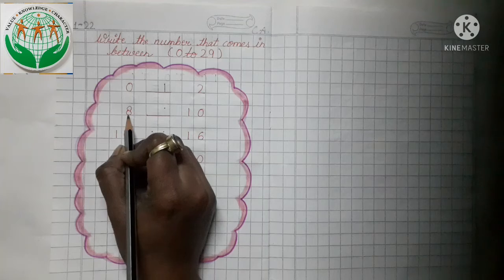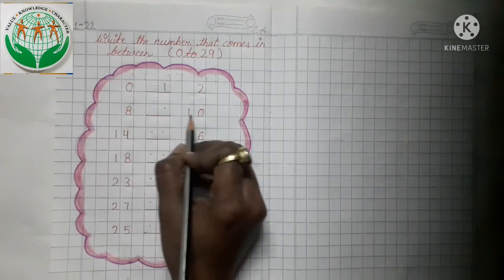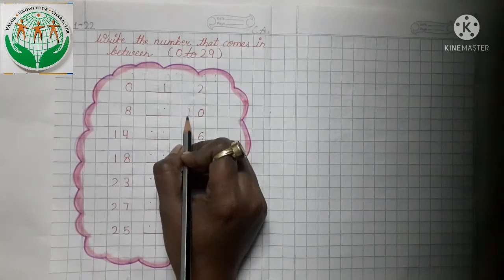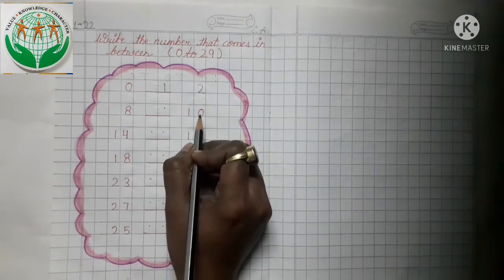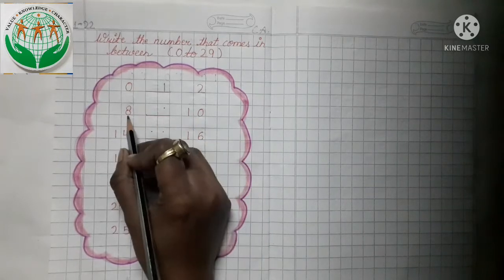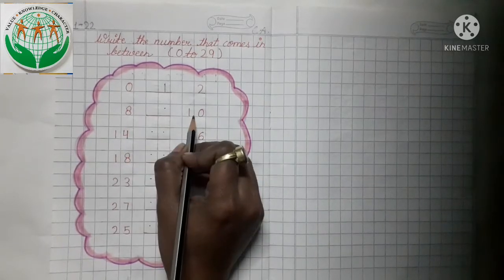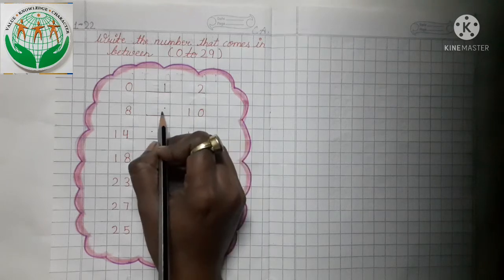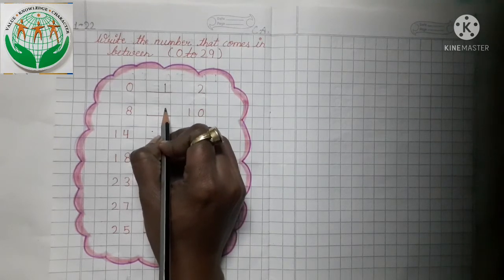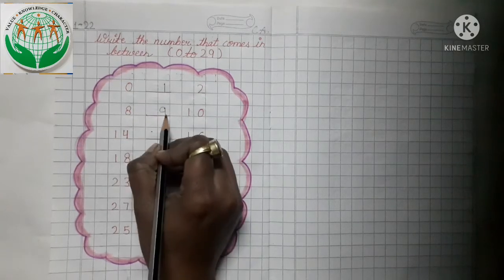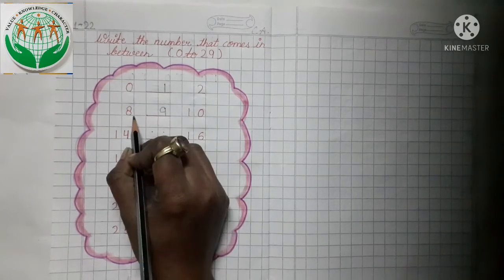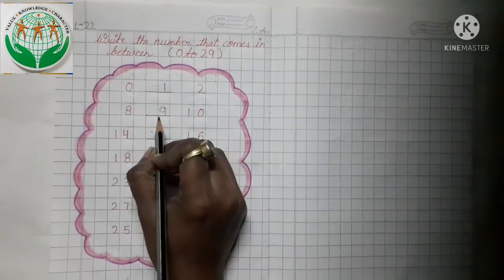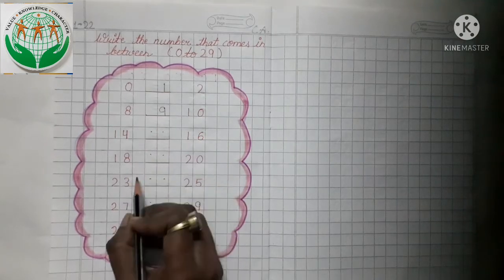This is number 8 and this is number 10. Now tell me what comes in between 8 and 10 — 8 and 10 ke bich mein kya aega? Yes, number 9. So we will write here number 9. 9 number kahan hai? 8 and 10 ke between.